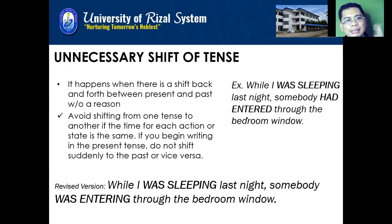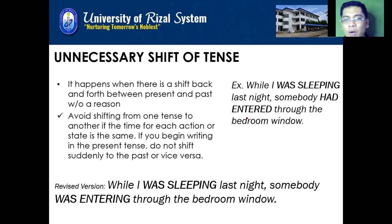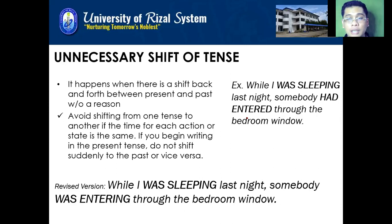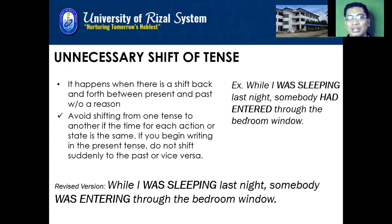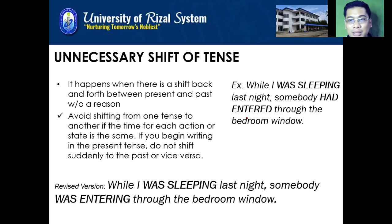However, there are some instances where consistency of tense may not be applied. First, if the sentence is expressing a general truth — something that is still unchanged. For example, according to the law of gravity: 'When you throw an object up in the air, the object falls down.' That is a general truth, so you always use present tense even if the main verb is in past tense. Whatever you throw up will always fall down — that is a general truth.